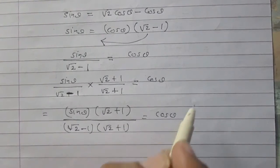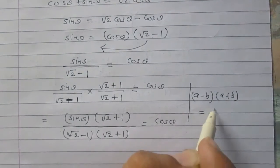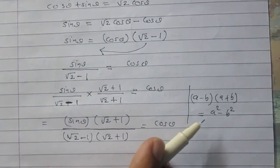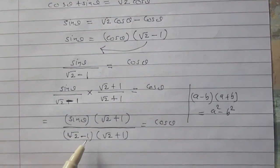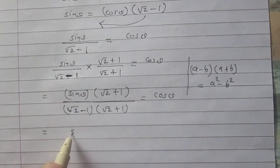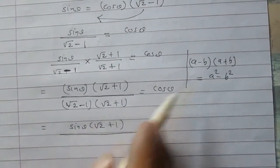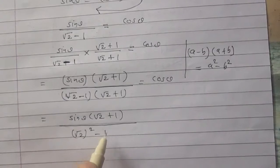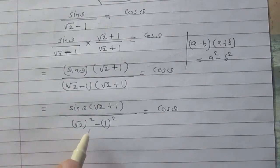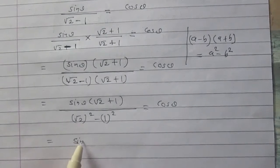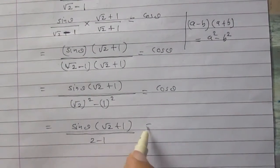The right hand side is cos θ. We know that (a minus b) multiplied by (a plus b) equals a squared minus b squared. We apply this identity where a stands for square root of 2 and b stands for 1. Using this identity, the denominator becomes (square root of 2) squared minus 1 squared, which is 2 minus 1, equal to 1. So we have sin θ times (square root of 2 plus 1) divided by 1, equal to cos θ.